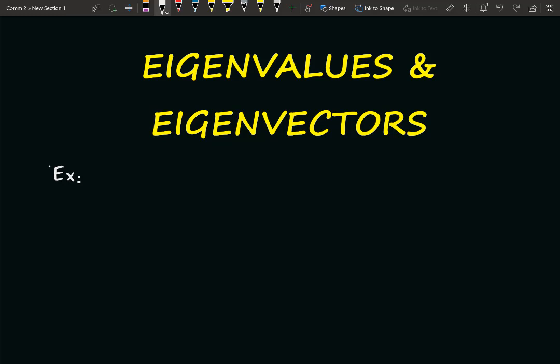As an example, let us assume that the matrix we are going to consider is a 2 by 2 matrix: 2, minus 1, minus 1, and 2.